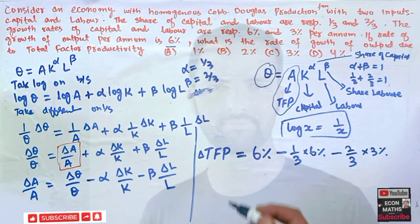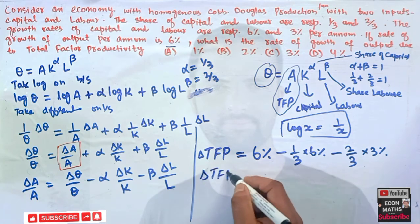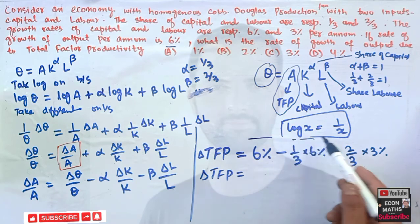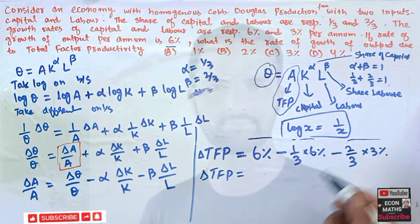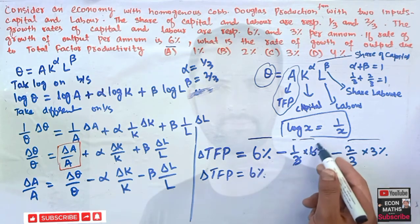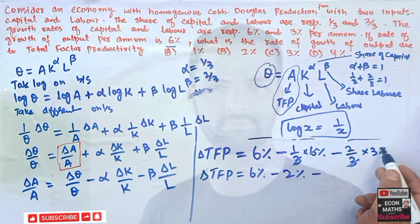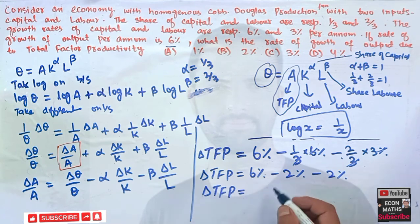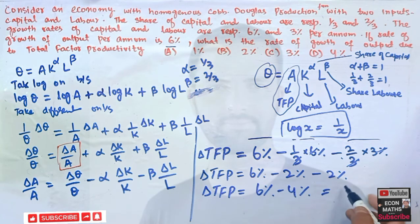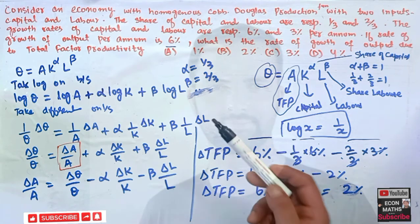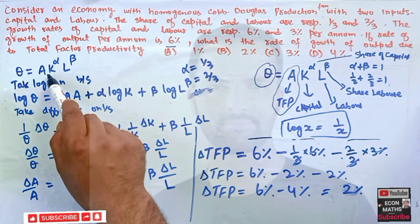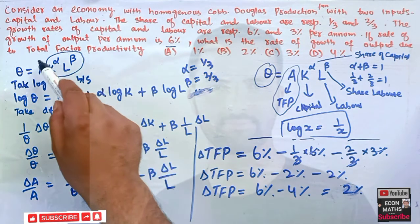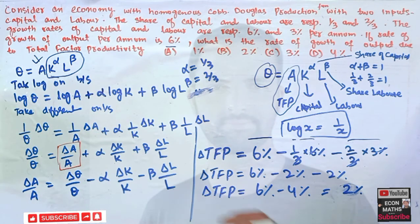Computing: (1/3)×6% = 2% and (2/3)×3% = 2%, so dA/A = 6% − 2% − 2% = 2%. The change in total factor productivity is therefore 2%. We also call this the Solow residual — that change in output which is not explained by capital or labor, but by the state of technology.